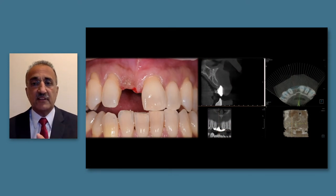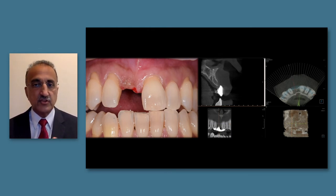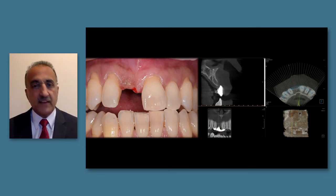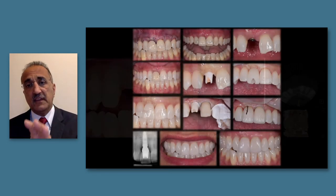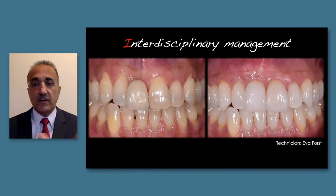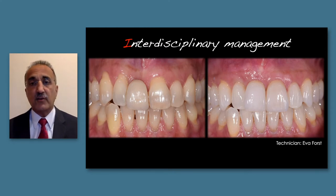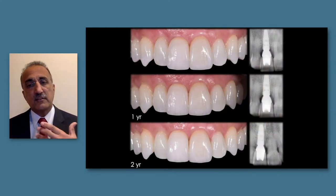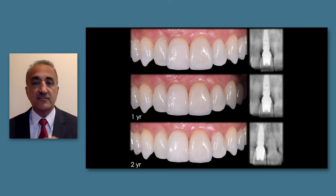At the planning stage we use CBCT - these digital tools are so helpful, particularly to evaluate the ridge and understand the bone anatomy and plan treatment. We then take the case through to surgical and prosthetic restoration and the final result. The before-and-after comparison and follow-up show how the quality of soft tissue improves with time, particularly when we use connective tissue grafts.